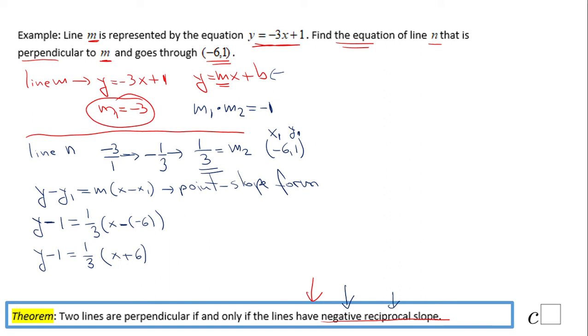Let's get the slope-intercept form first. If you want the slope-intercept form, you need to use the distributive property: y minus 1 equals 1/3 x plus 1/3 times 6. How much is 1/3 times 6? That is 2.